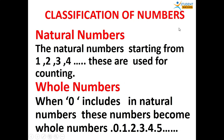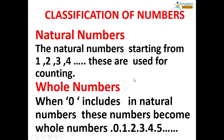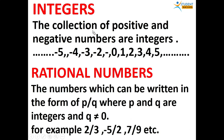Classifications of numbers: First, natural numbers — starting from 1, 2, 3, 4 — these are used for counting. After that, whole numbers: when 0 is included in this collection, it becomes whole numbers, that is 0, 1, 2, 3, 4 and so on. After that, integers: the collection of positive and negative numbers are integers.